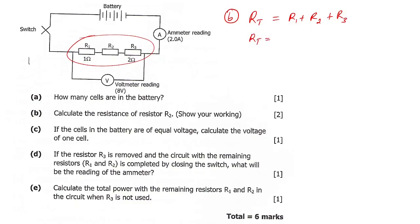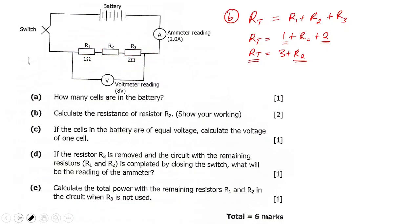We are given R1 as 1 ohm, R3 as 2 ohms, and R2 is what we need to find. Collecting like terms: R_total = 3 + R2. We need to find R_total, and we can find it using the voltage across the circuit, which is 8 volts.